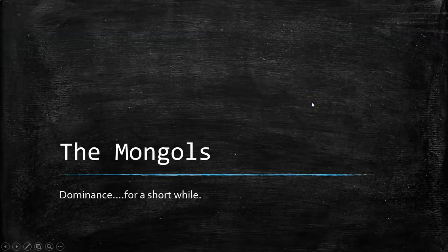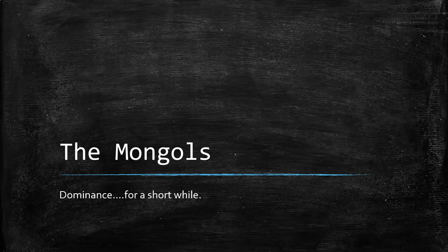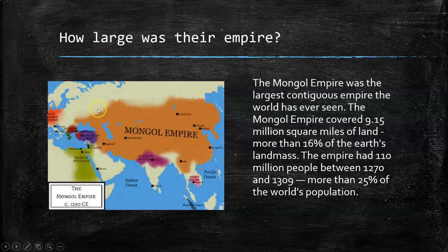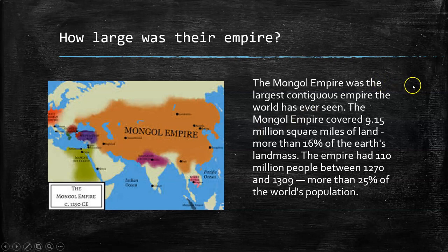I'm going to begin with the word dominance or hegemony. The Mongols were dominant — like crazy dominant — but it didn't last very long. It was kind of short-lived compared to a lot of other empires. Look at this big orange swath of land going from Asia through the steppes, through Eastern Europe into the Middle East, into Southeast Asia. Absolutely enormous — 16% of the Earth's land mass was conquered by the Mongols.